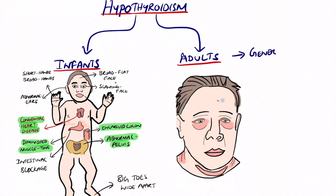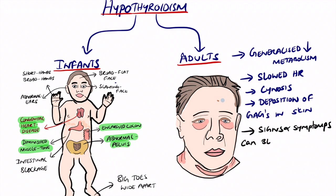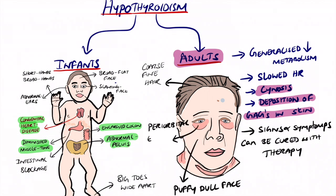In adults, hypothyroidism is completely different. There is a generalized decrease in metabolism leading to weight gain. Patients have a slowed or bradycardic heart and may present with cyanosis. Due to deposition of glycosaminoglycans in the skin, the skin appears thicker and more turgid, and patients may have periorbital edema around the eyes and in the neck region. They may have goiter due to diffuse enlargement of the thyroid, and a puffy dull face with fine coarse hair.